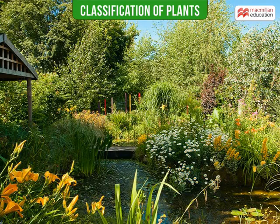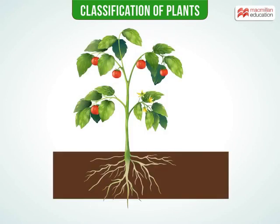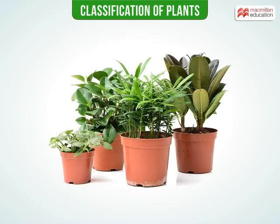Do you know there are millions of different plant species on earth? Have you ever wondered how difficult it would be for a scientist to study each of them? While all plants have similar parts that are essential for their living, they often look different. These differences are used to group plants into different types.